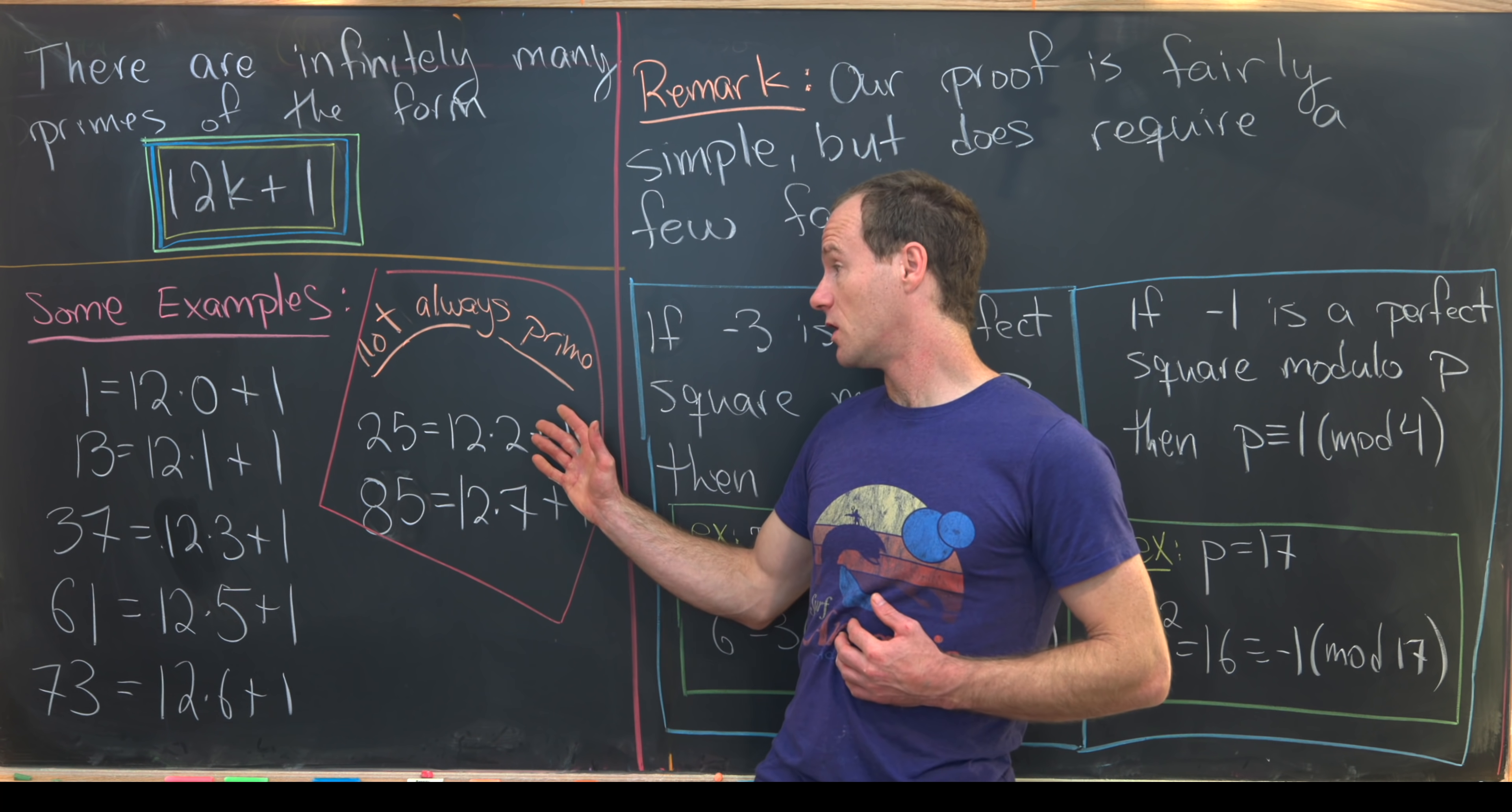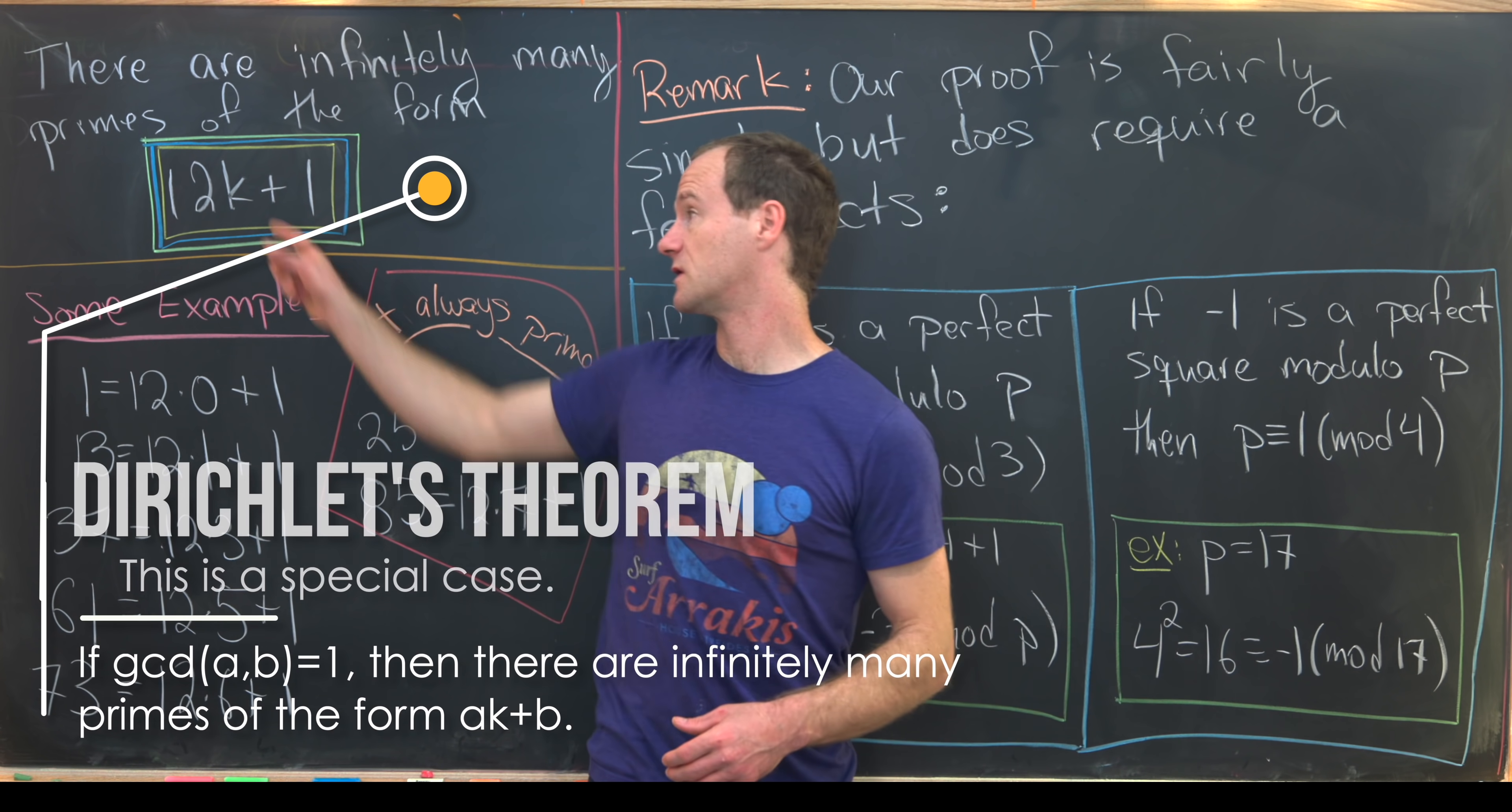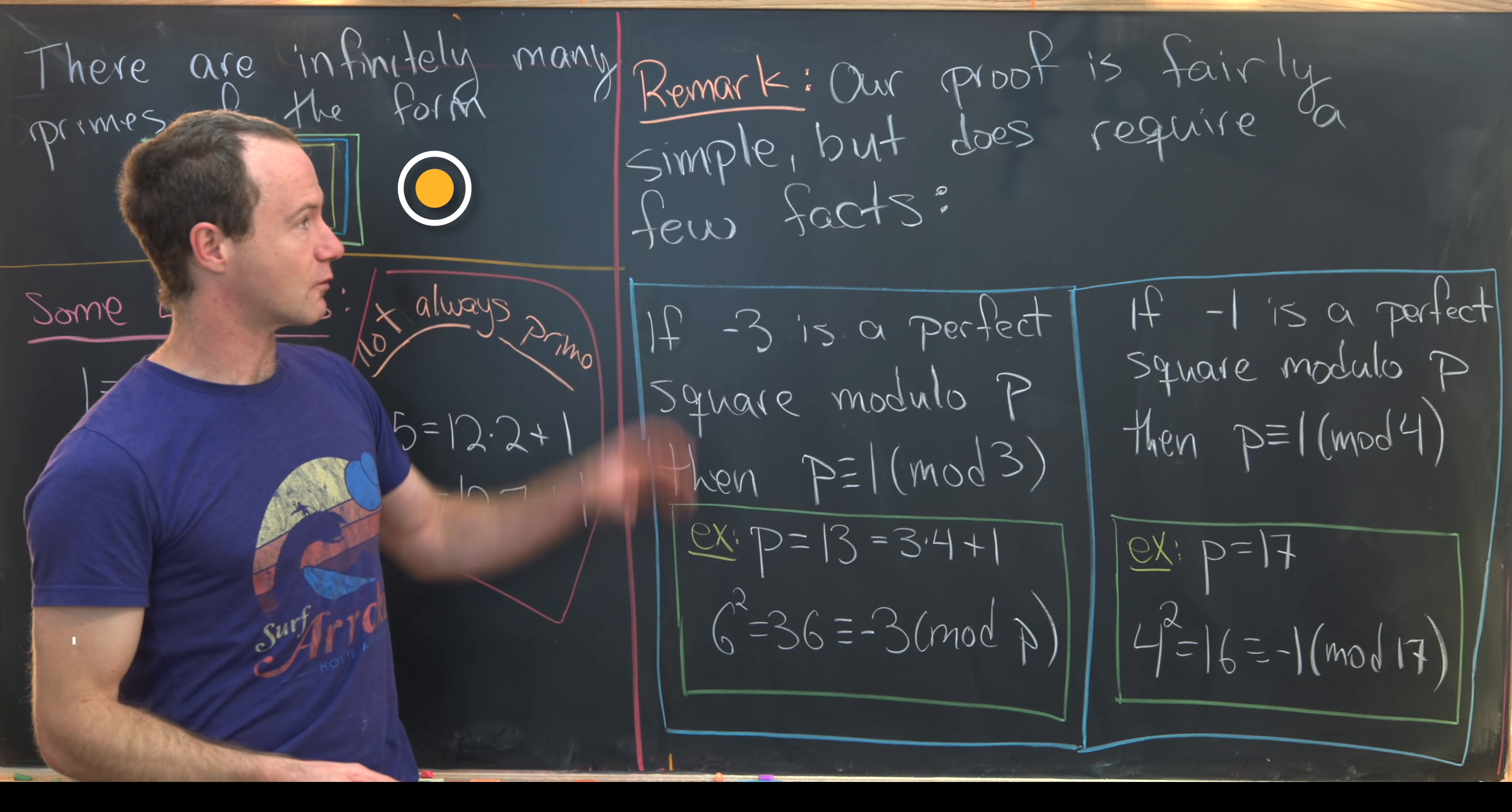So even though not all of them are prime, there are in fact infinitely many primes on the list of numbers of this form. And that's what we're going to prove today. And before we get started, I want to make a remark.